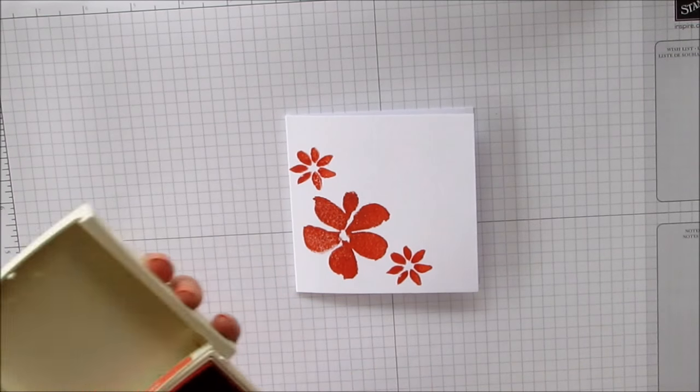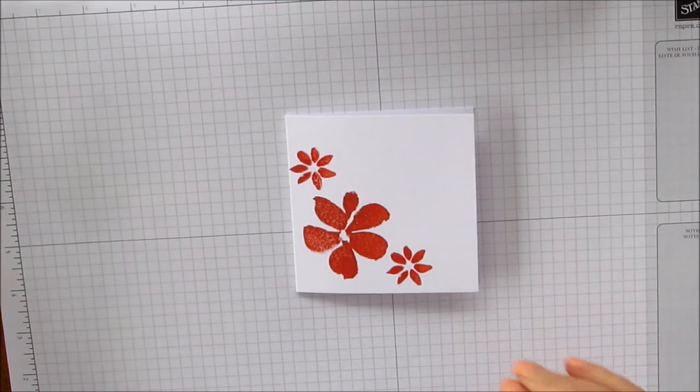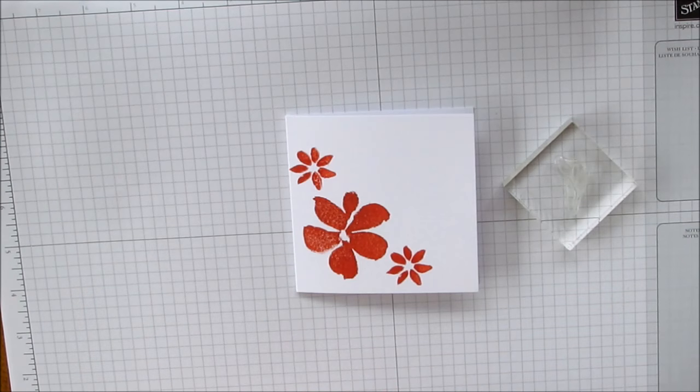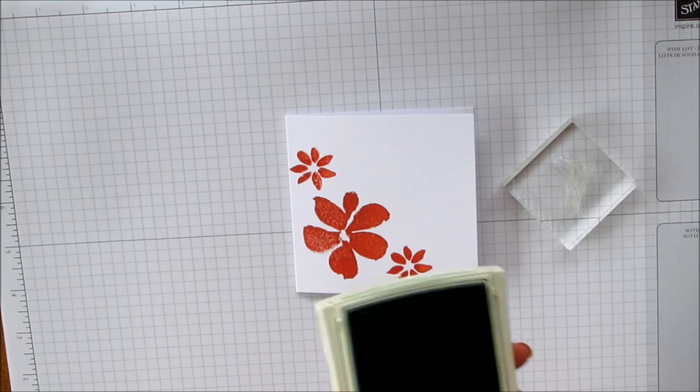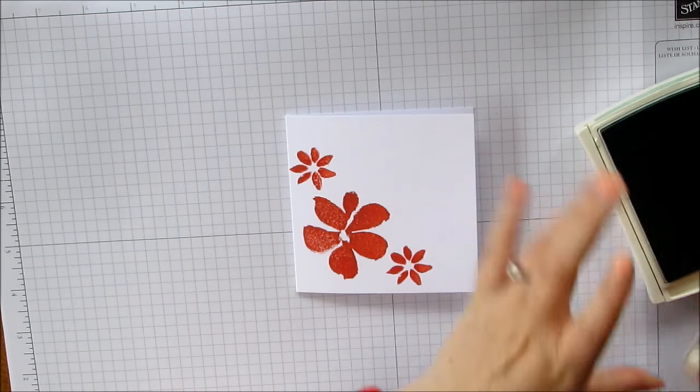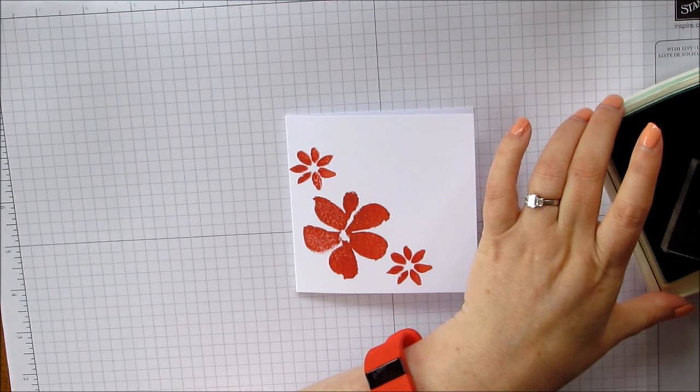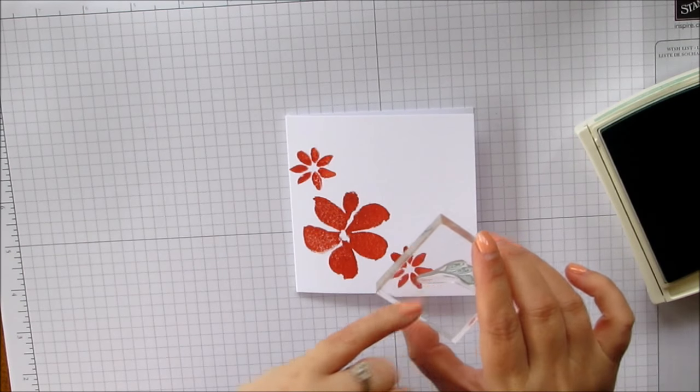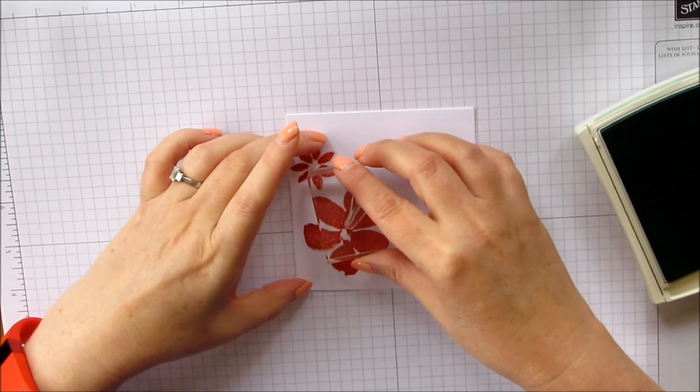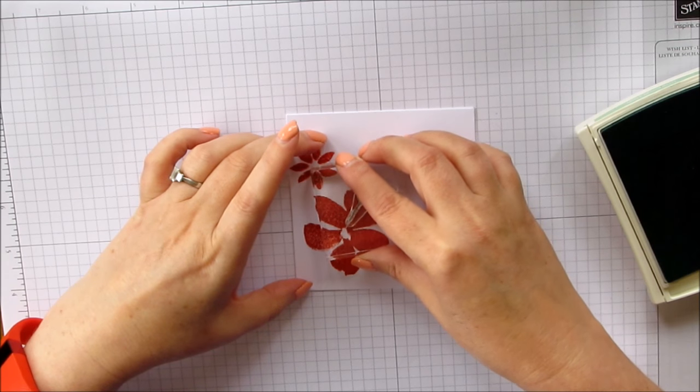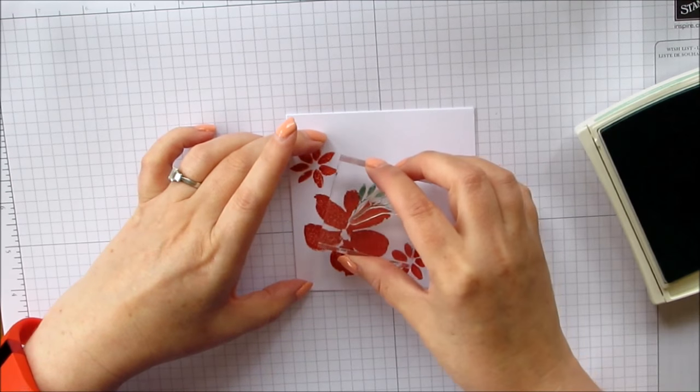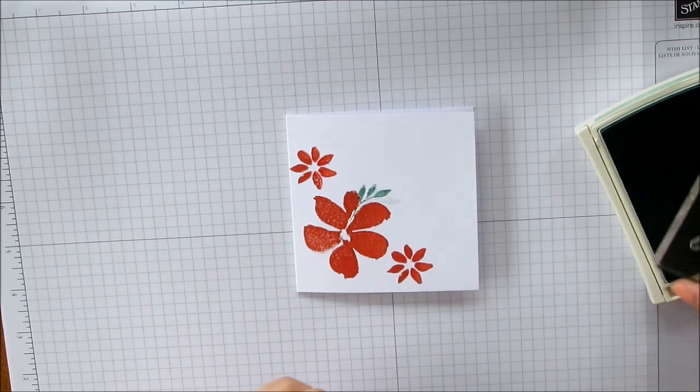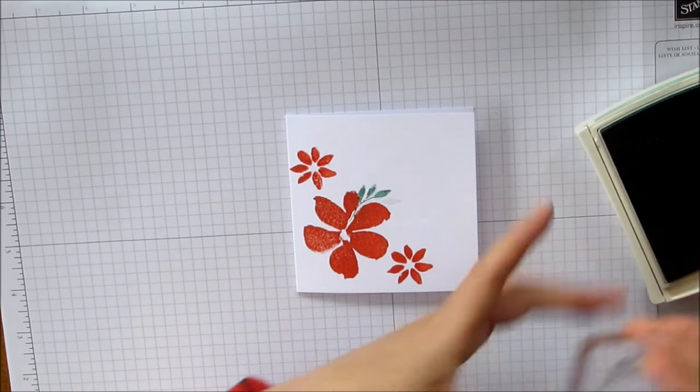And then we're going to bring in mint macaron for one of our little leaves. And I'm just going to use the little stem. I'm just going to sort of put it in between the petals slightly. I'm going to stamp it once and then just move it slightly and stamp again. So you have a slightly faded leaf as well. Just to fill it out a little bit.